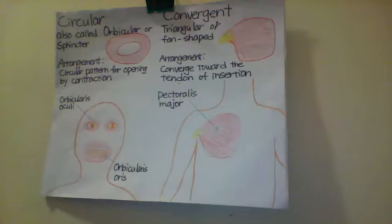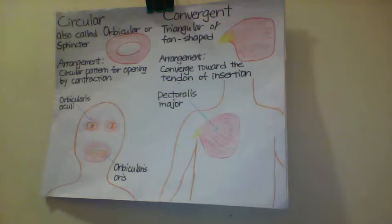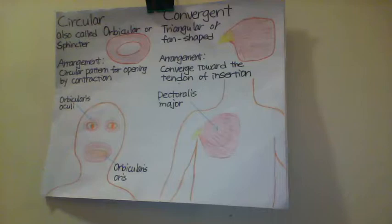Circular muscles are also called orbicular or sphincters. The orbicularis oris muscle is a circular muscle that goes around the mouth. When it contracts, the oral opening becomes smaller. Another example is orbicularis oculi, one of which surrounds each eye.